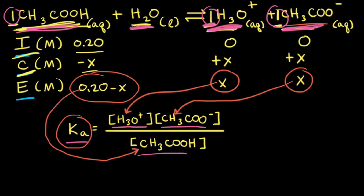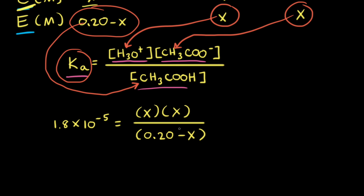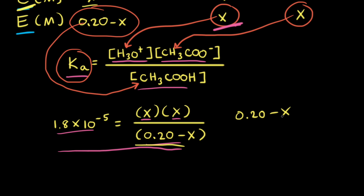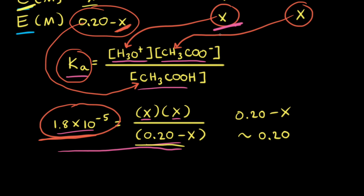We also plug in the Ka value of 1.8 times 10 to the negative fifth. To make the math easier, we use an approximation: 0.20 minus X is approximately equal to 0.20. We can make this approximation because acetic acid is a weak acid — Ka is less than one — meaning it only partially ionizes to a very small extent. Therefore, X is a very small number, and 0.20 minus X is approximately equal to 0.20.